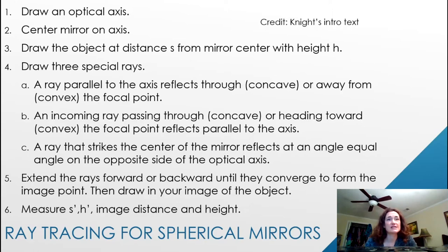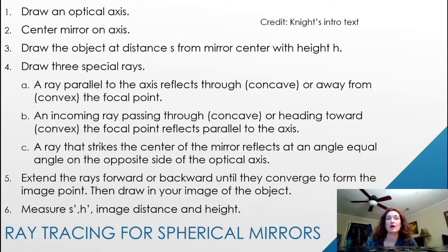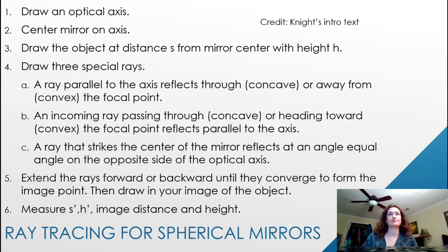Next, extend the rays forward or backward until they converge to form an image point. Then draw your image of the object and measure the image height h′ and image distance s′. We'll also introduce some equations for spherical mirrors so you can calculate them directly — useful if you're a terrible artist like me.